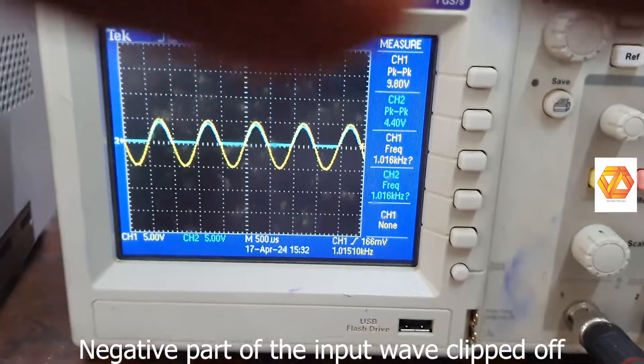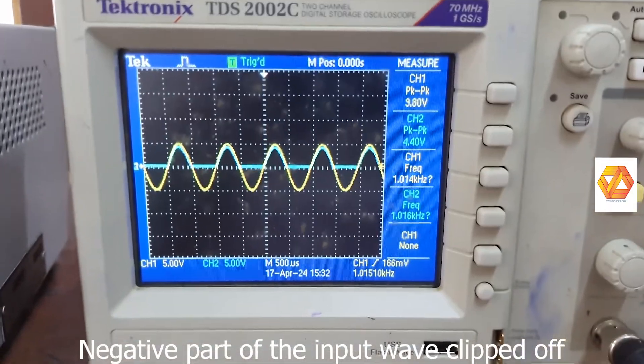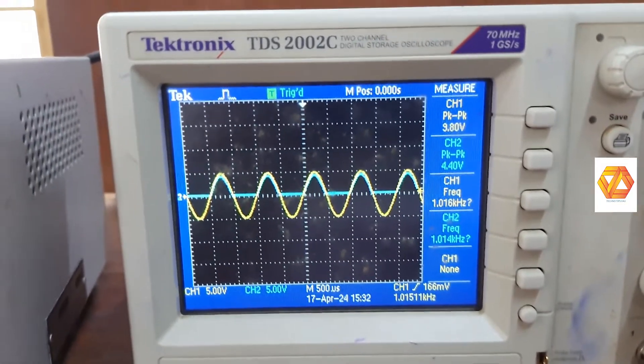Now you can see the output waveform. The blue color waveform is the output. The negative part of the input waveform is clipped off.